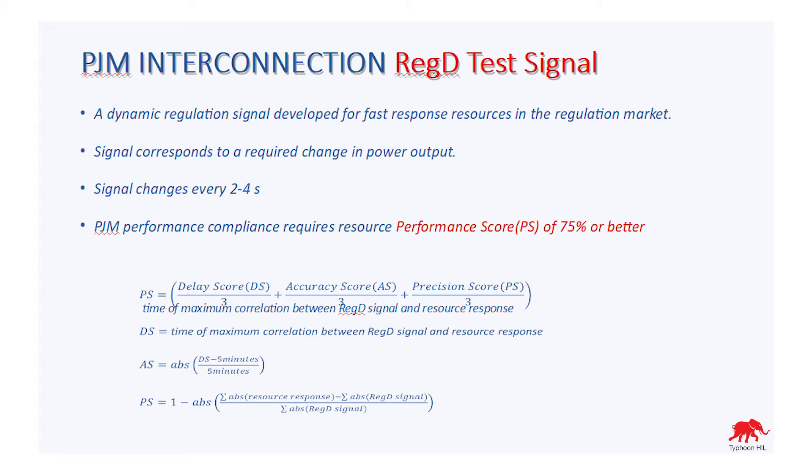And PGM performance compliance requires resource performance scores of 75% or better. The performance score is computed by taking into account the correlation of the power outputs of the distributed energy resources and the Reg D test signals, and also the delay in response of these resources. And the performance score is computed according to this formula.